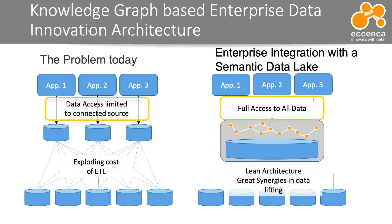You can also integrate different granularities — links between different external and internal data, or mappings to relational data, which can become part of such a knowledge graph. In an enterprise, the traditional architecture requires integrating all sources with each other. The cost of integrating those basically grows quadratically with the number of sources. Using a knowledge graph as an integration layer allows you to create a mapping only to this vocabulary, to the knowledge graph, to the ontology, and then benefit from existing mappings.